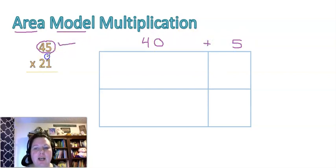What about times 21? We need to take that number and also break it up into tens and ones. So if I look at my tens place, I see there's a two. That means there's two tens worth 20 and a one worth just one.